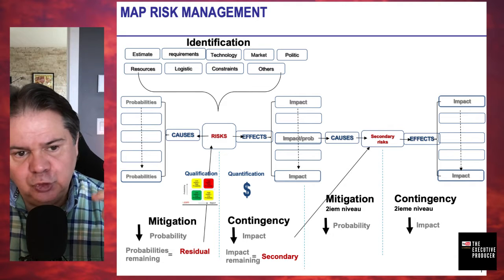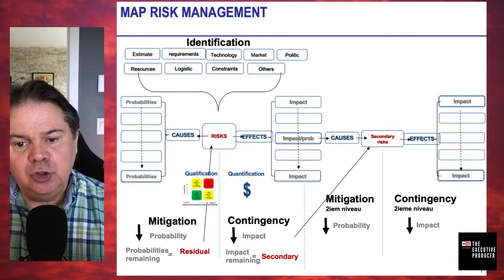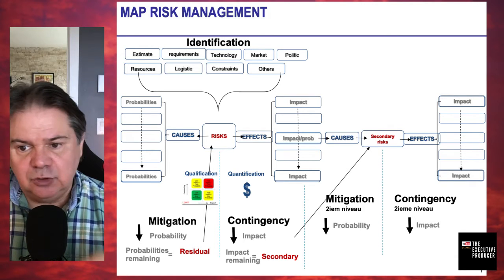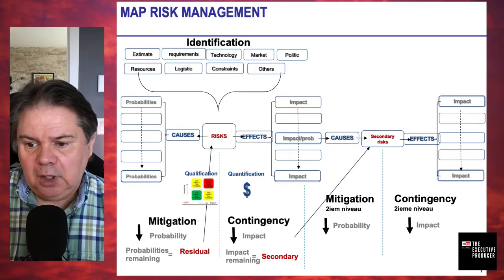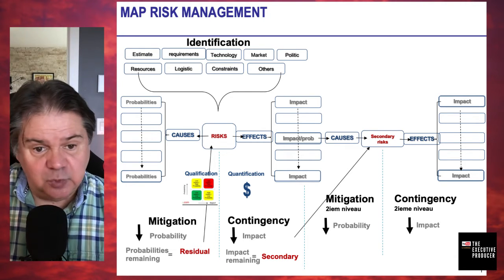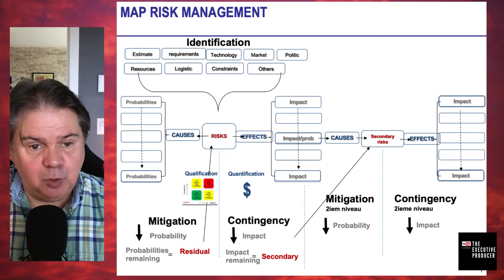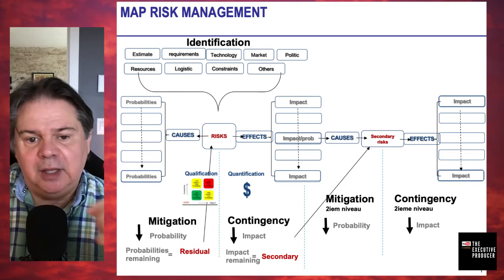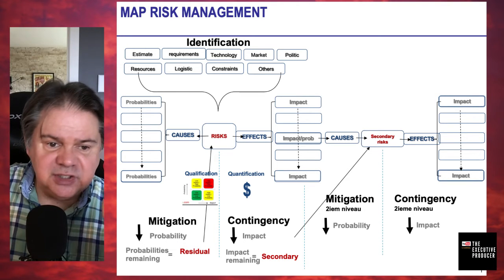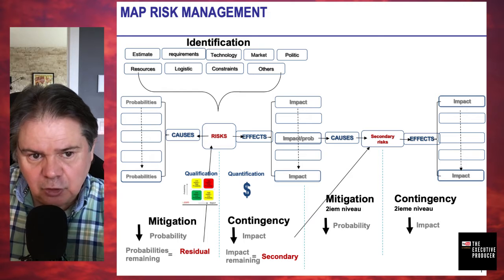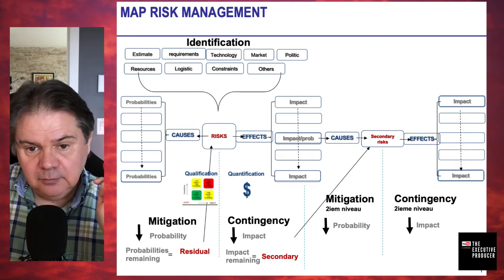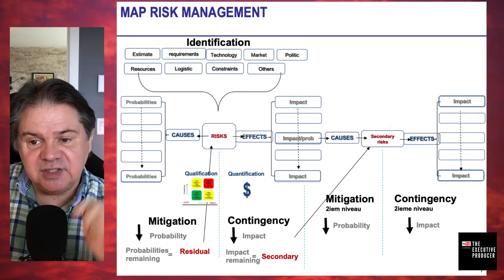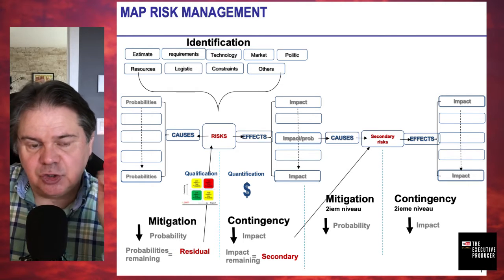Anything that is high probability and high consequence — we need to do something about that. Different combinations help you rapidly position all your risks and make decisions. To do this you enter these risks into what we call a risk register, which will be the topic of another video. That register generates the color-coded qualification — yellow, red, green — the matrix that rapidly allows you to position your risks and make decisions.